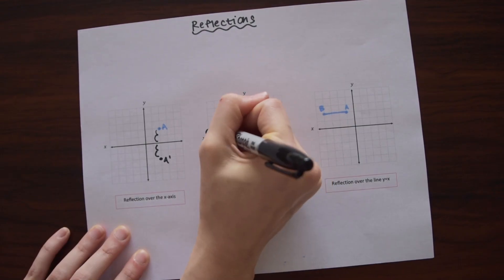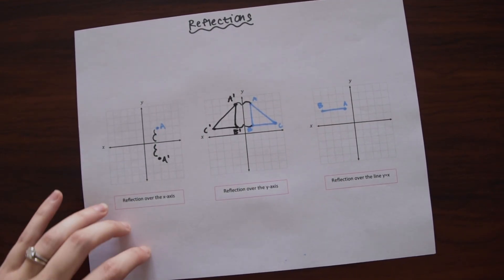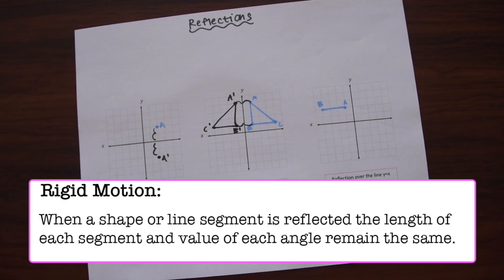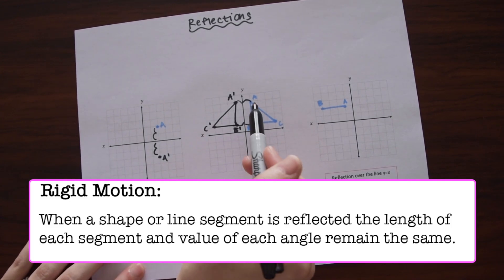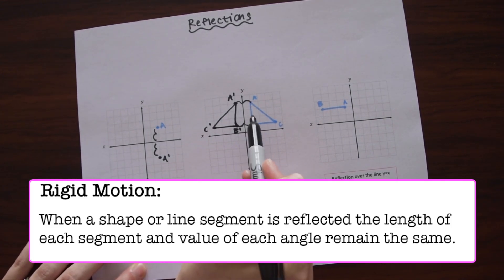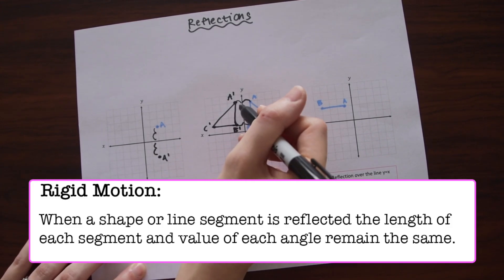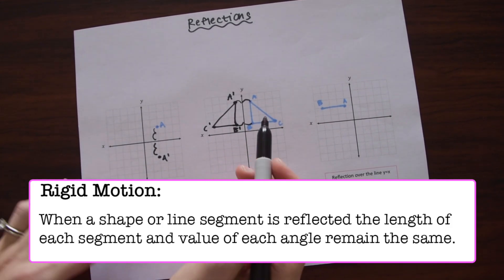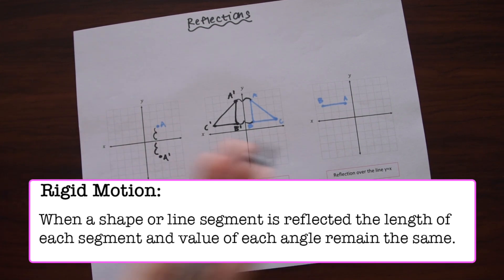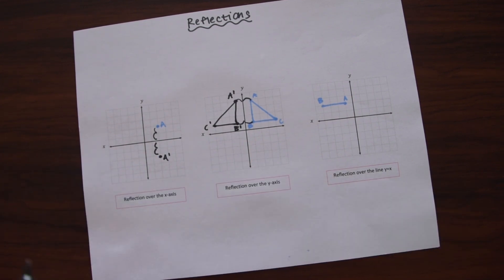So something interesting about reflections is that they retain something called rigid motion. So all that means is that all the line segments after our shape is reflected remain the same. Notice how line segment AB is three units and then we reflected it and we have A prime B prime. This line segment is also three units. So all the line segments are going to be the same once we reflect this shape, all the lines and all the angles.